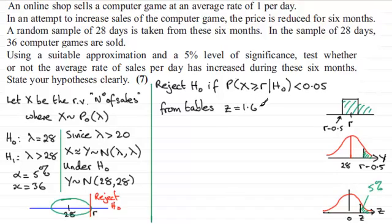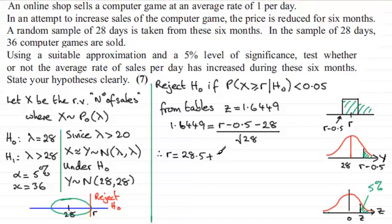Now we know that z always connects the observed value through this formula: the z value, in this case 1.6449, is equal to the observed value, which is r minus 0.5, and then we subtract the mean 28 and divide this by the standard deviation, which will be square root of 28. We need to rearrange this for r. If I multiply both sides by root 28 and add 28.5, I'm going to have r equals 28.5 plus 1.6449 multiplied by the square root of 28. Working this out, we end up with r equaling 37.20 and so on.